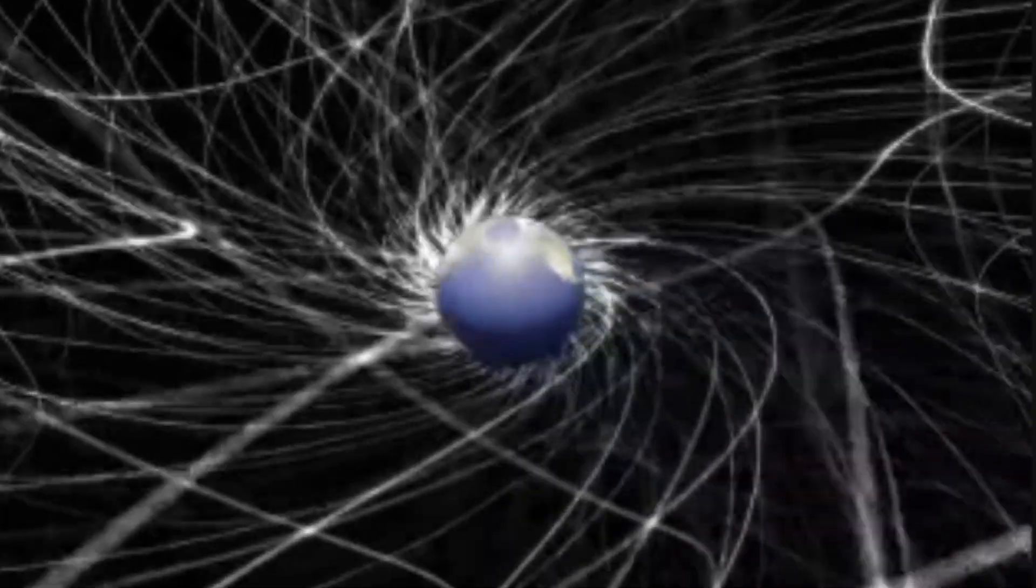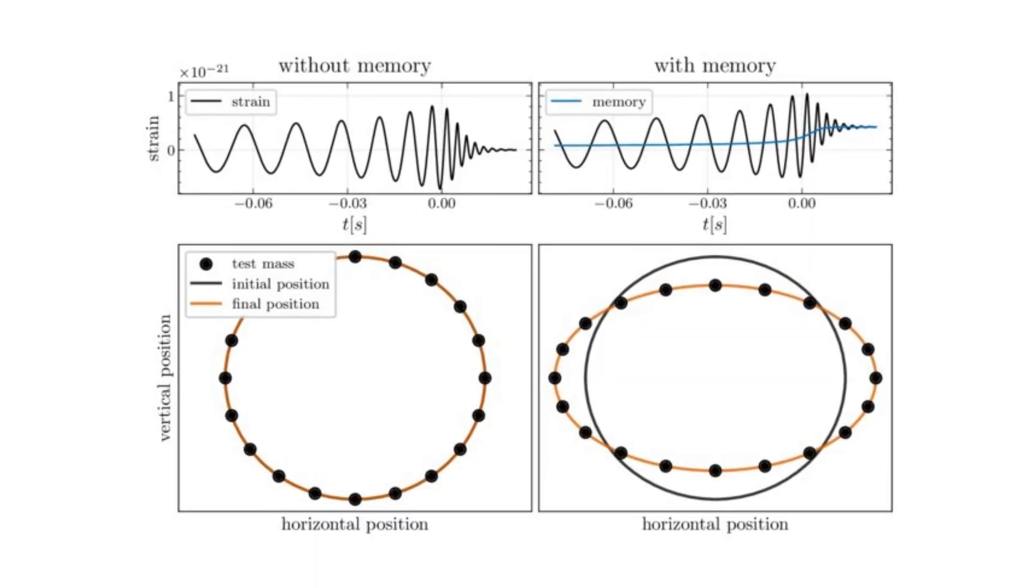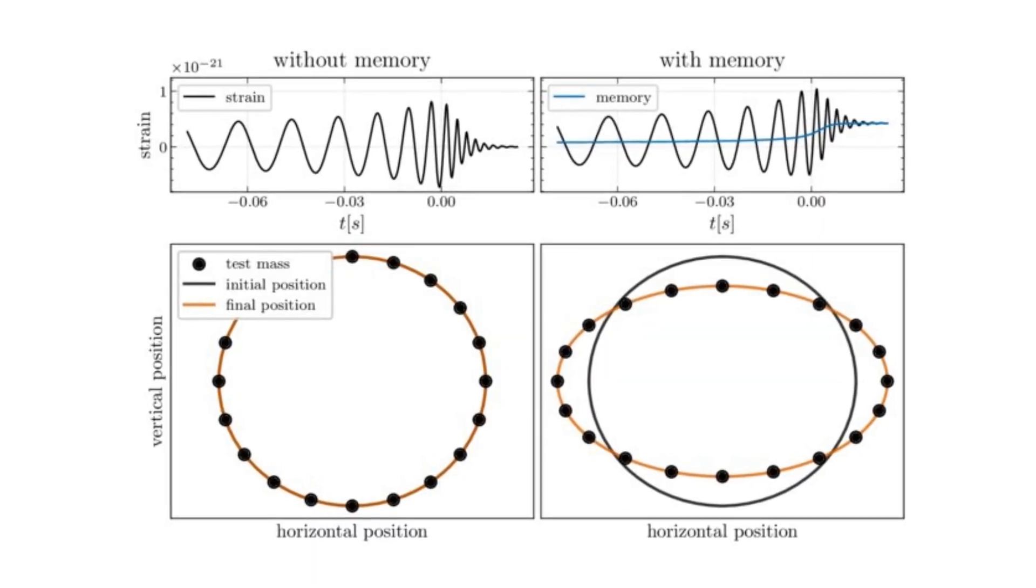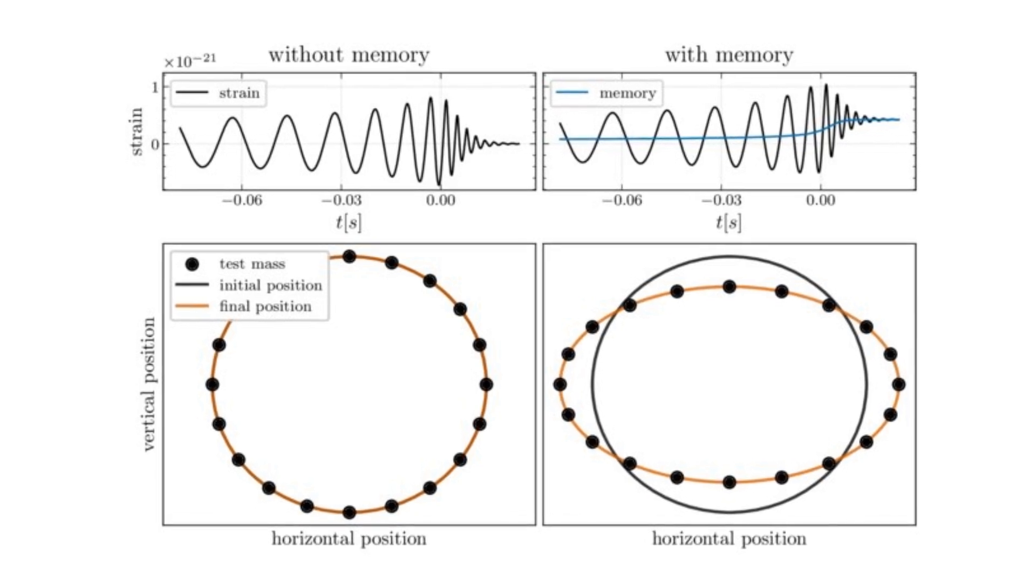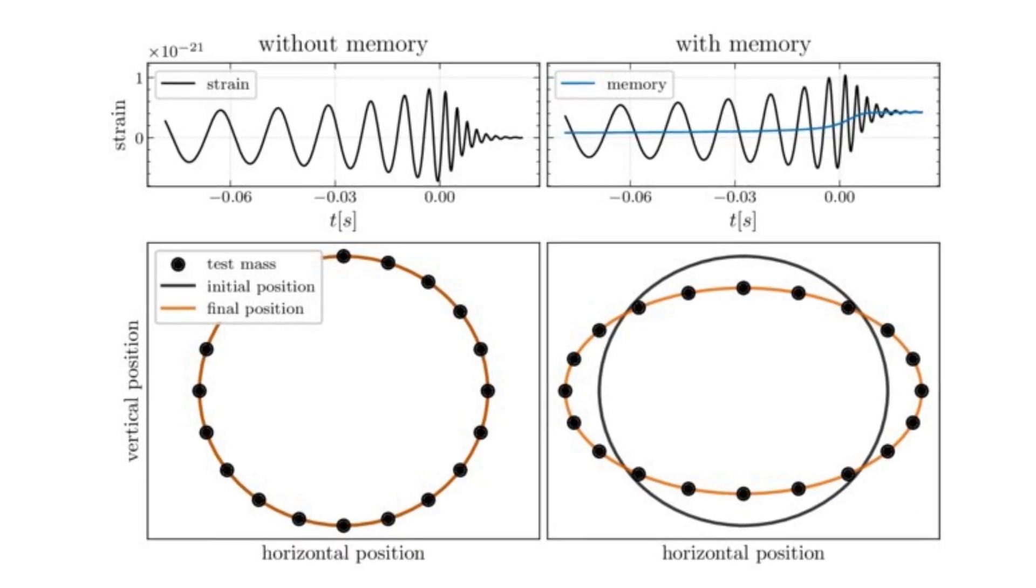And moving to general relativity itself, there are also counterintuitive effects. One of them is the not-yet-confirmed prediction of gravitational memory. Test masses can remain permanently displaced after the passing of a gravitational wave. One would expect that after a gravitational wave passes through a system of particles, their relative positions do not change, but general relativity predicts otherwise, even in its linear approximation, which in this case is not gravito-electromagnetism.